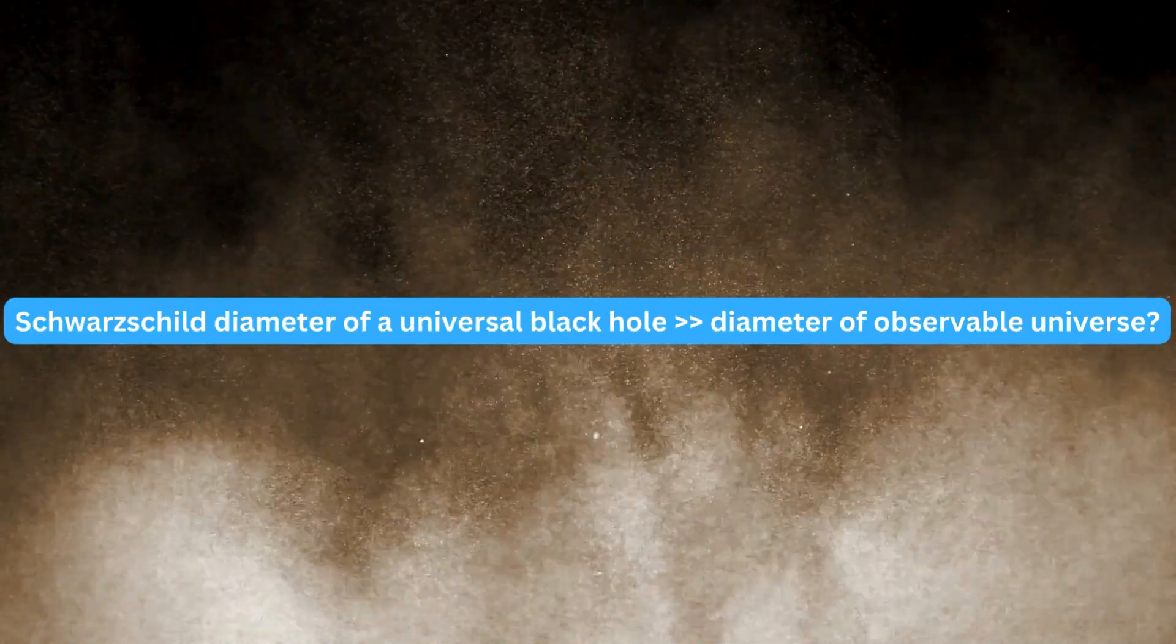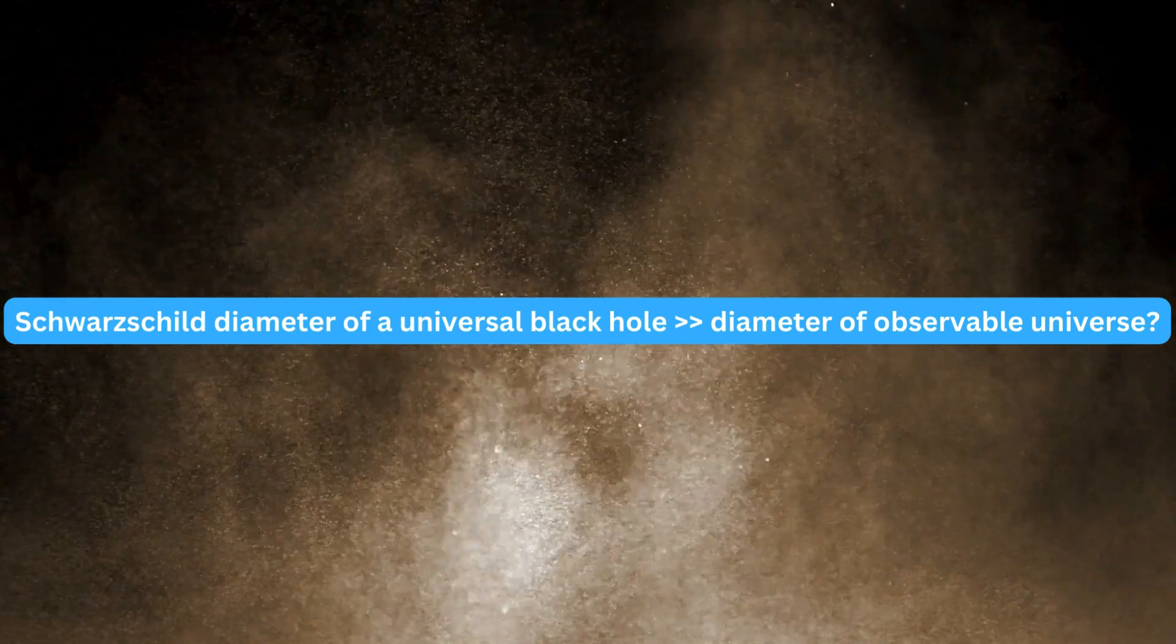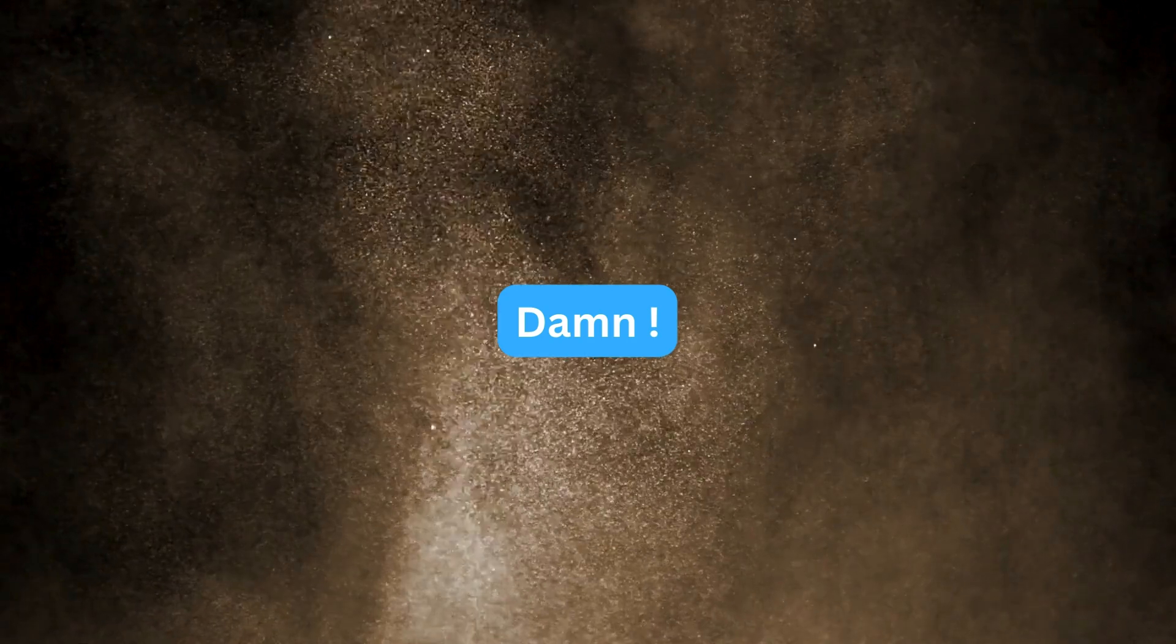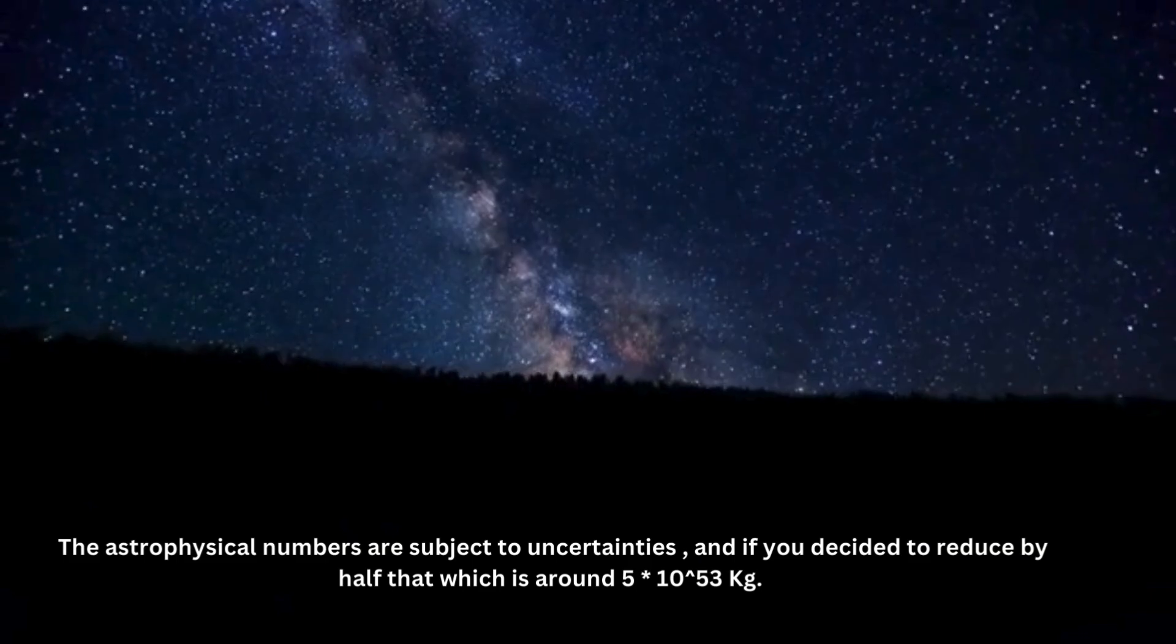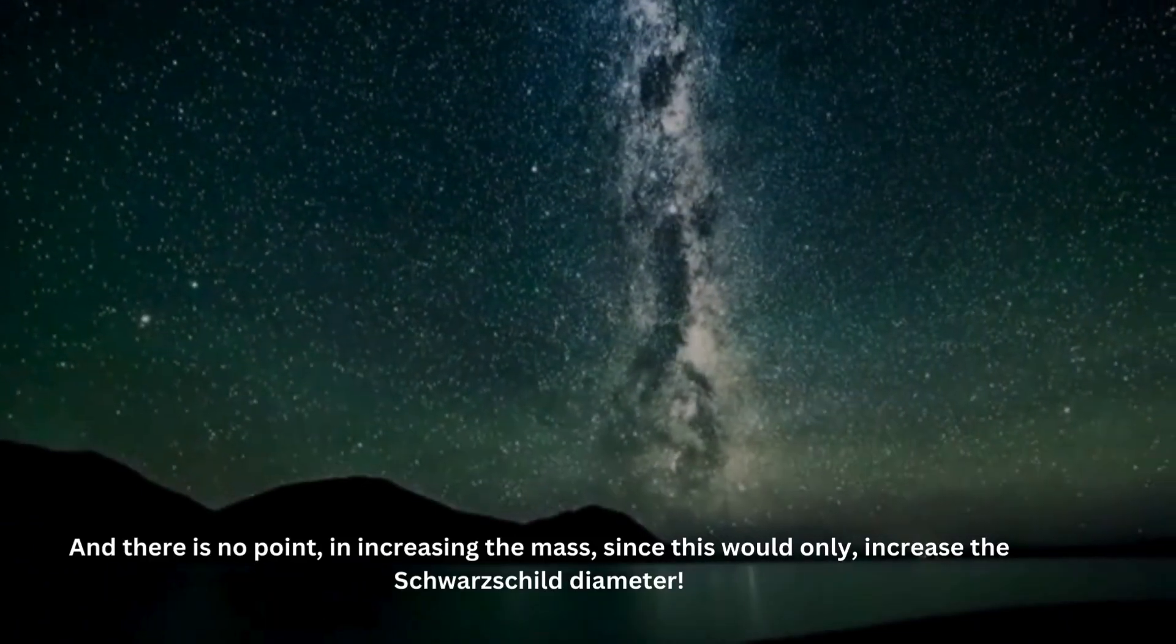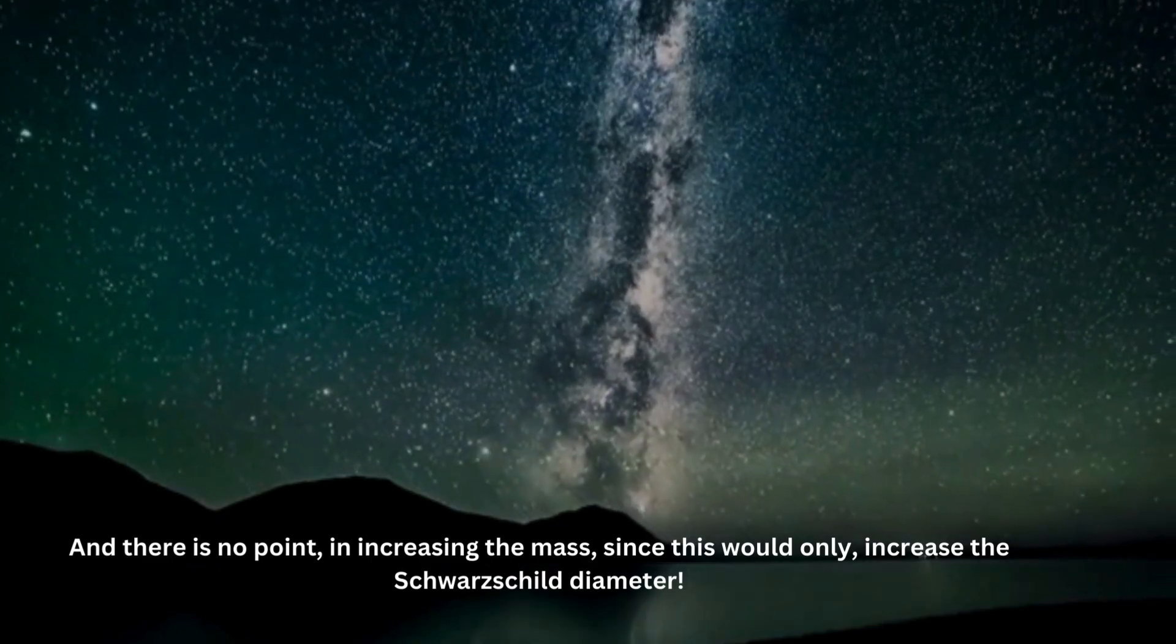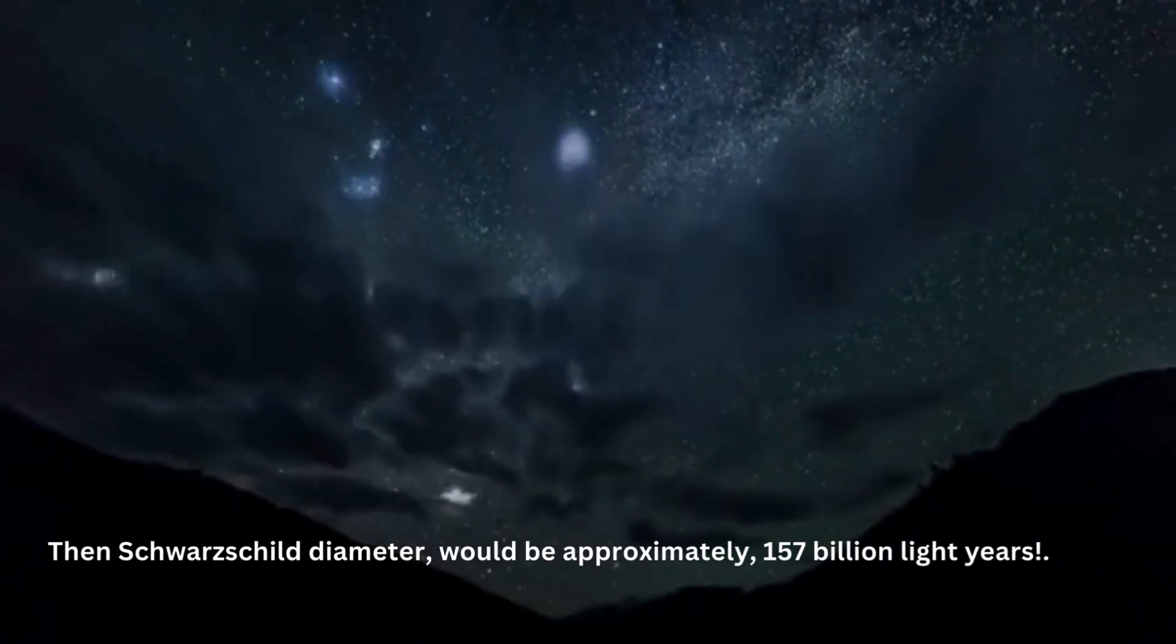Wait a minute. The Schwarzschild diameter of a universal black hole is greater than the observable universe? Damn. Wow, that's unexpected. Let's think. The astrophysical numbers are subject to uncertainties, and if you decided to reduce by half, that which is around 5 times 10 raised to 53 kg, and there is no point in increasing the mass since this would only increase the Schwarzschild diameter. Then, Schwarzschild diameter would be approximately 157 billion light-years.